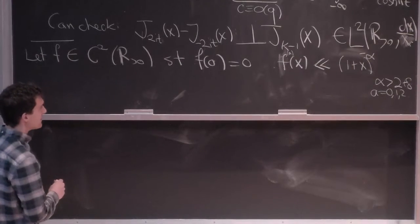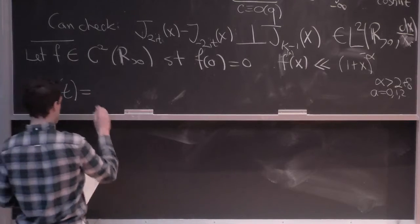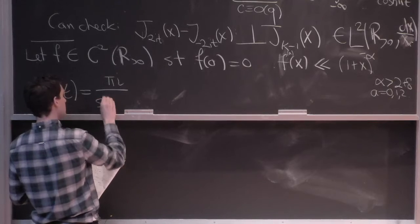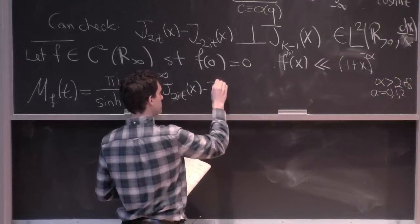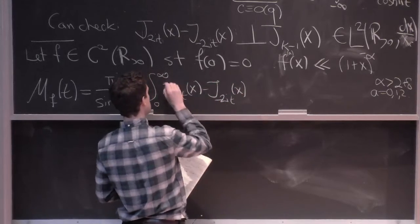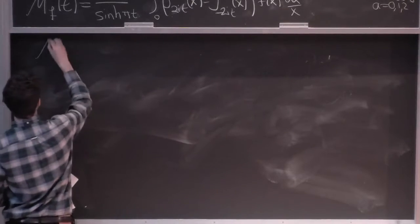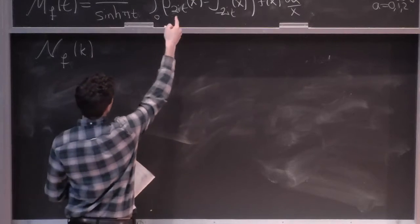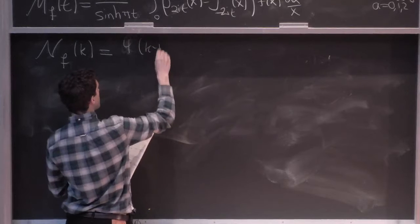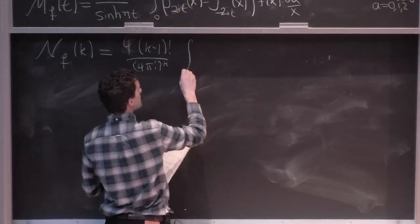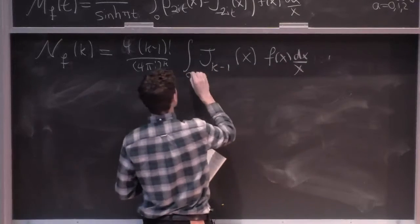Okay, and then let me write down the integral transforms that end up coming out. So here are some integral transforms. So M_f(t) is going to be πi over sinh(πt) integral 0 to infinity of the imaginary part Bessel functions. And then, similarly, I'll have integral transform for the real argument Bessel functions. So I'm going to have a gamma, say, 4k minus 1 factorial over, okay, so there's some normalization, but it's mostly integration against this Bessel function.